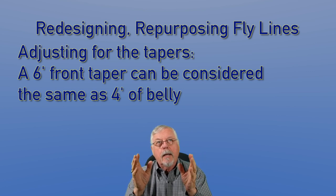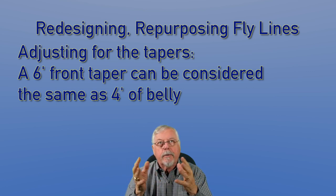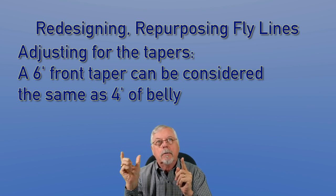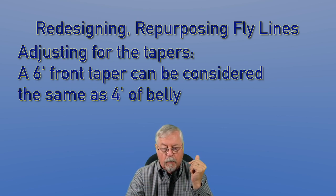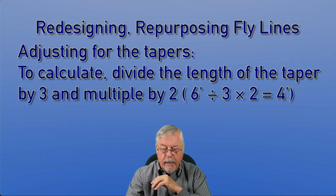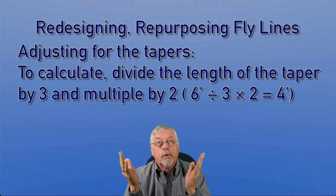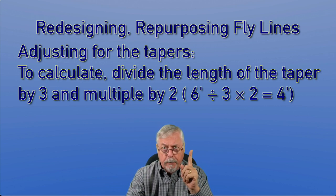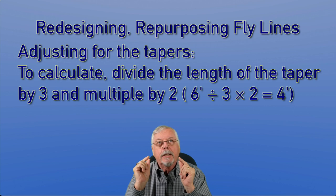Here I'm using an example where the fly line — that five-weight intermediate — has a six-foot front taper. Through doing all this kind of stuff over the years, I've found that two-thirds of the length of the taper is equivalent to the weight of the belly. So a six-foot front taper is equal to about four feet of belly, taking two-thirds. To calculate this, I divide by three and multiply by two: six divided by three is two, multiplied by two gives four. Two-thirds of the front taper — that's all we're doing. Once we have that number, we can use it to calculate the length of the head as if it were level line. That's the key part: as if it were level.